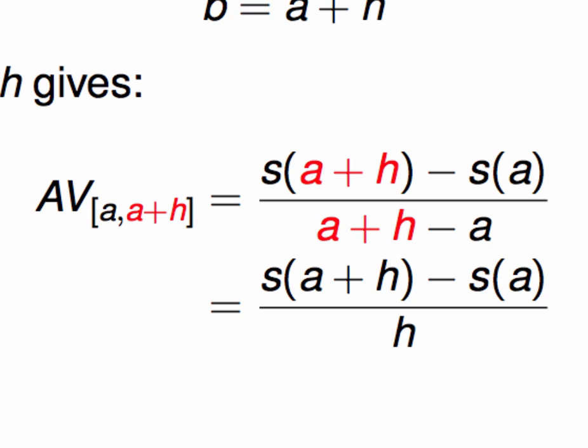Now, notice in the denominator, we can simplify a bit, because the a and the minus a cancel each other out. That leaves us with this alternative formula here, in terms not of two time values, but in terms of a starting time value and a change in time. This computes the same thing as the previous formula, but it does it from a different point of view. And it turns out, in very short order, it's going to be much easier for us to use.